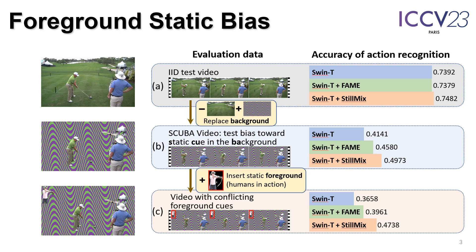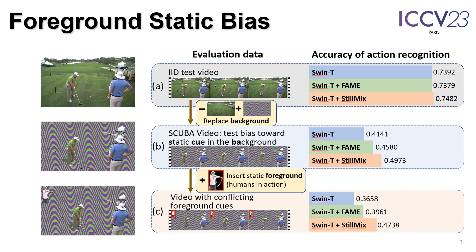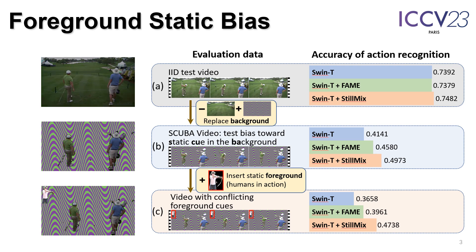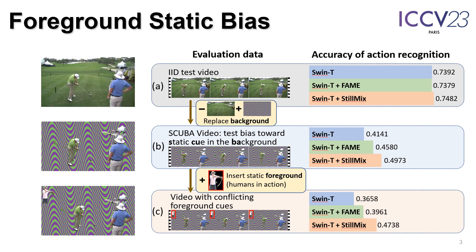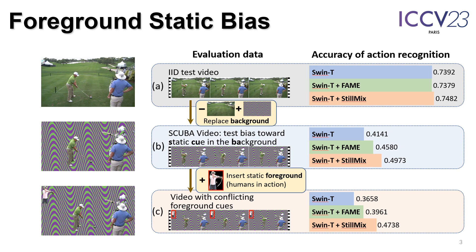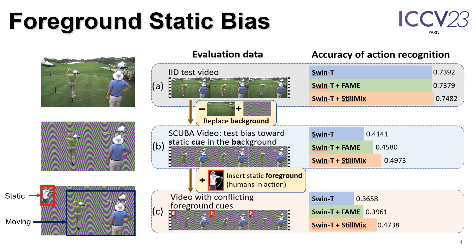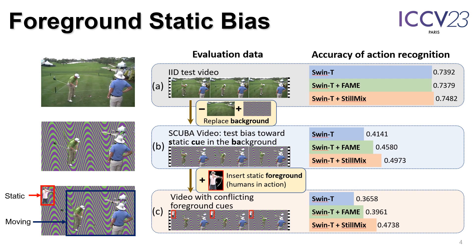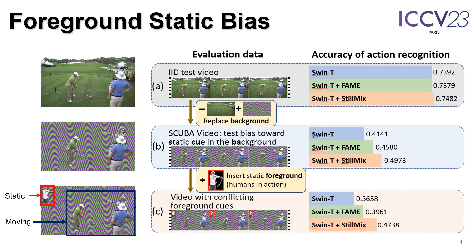To investigate the existence of foreground static bias, we create test videos with conflicting action cues from the moving part and the static part of the video. We first replace the background of an IID video with a sinusoidal stripe image, then extract a foreground from one frame of another video and insert the static foreground into all frames. The resultant video has a meaningless background, so action information must come from the foreground, which contains both a static and a moving feature indicating different action labels. This design allows quantification of foreground static bias.